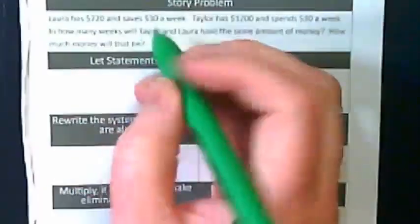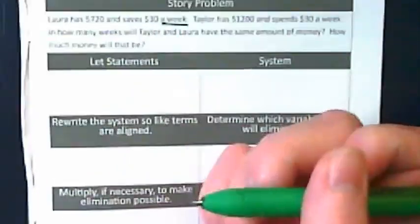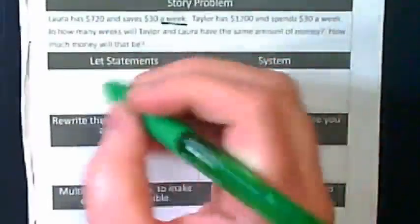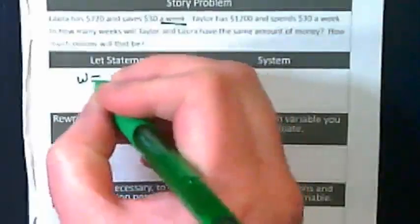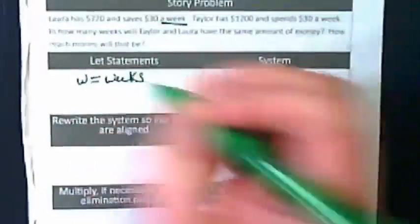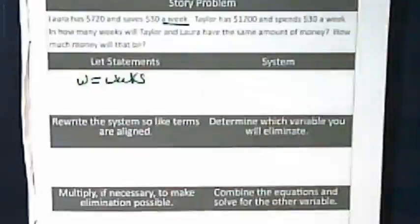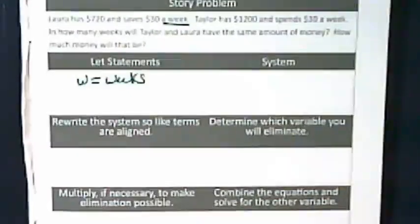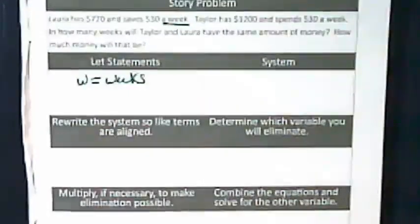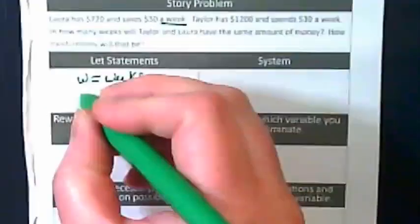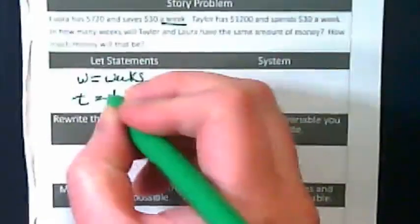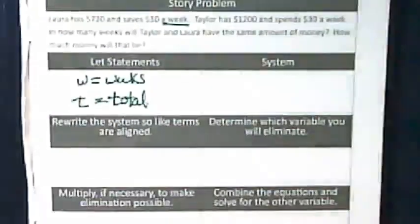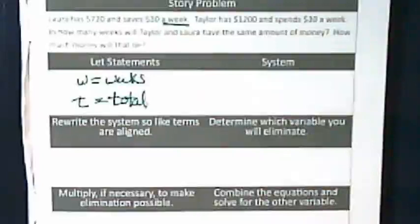So we know we've got weeks. One of our let statements has to be about weeks, doesn't it? I'm going to say W is equal to weeks. Anybody want to guess what the other variable should be about? M for the amount of money. It's about the amount of money. I'm not going to use M. I'm going to use T for total. But you could use M for money. That works too.